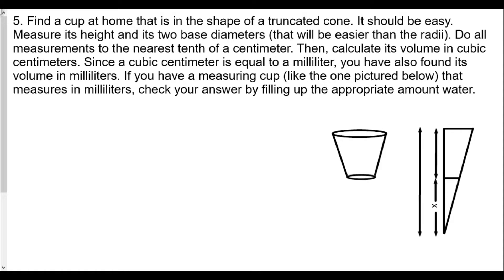Find a cup at home that's the shape of a truncated cone - it looks like a cone except the tip is chopped off. It should be easy. Measure its height and its two base diameters to the nearest tenth of a centimeter. Calculate its volume in cubic centimeters. Since a cubic centimeter equals a milliliter, you've also found its volume in milliliters. If you have a measuring cup, check your answer by filling up the appropriate amount of water.